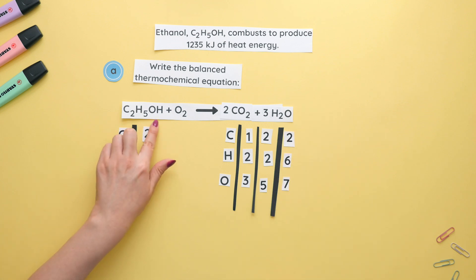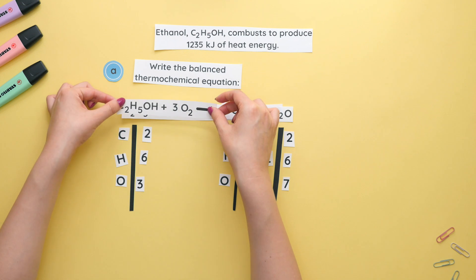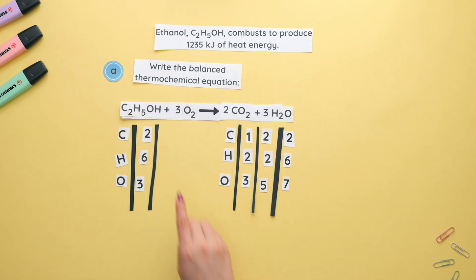We now have six hydrogens and four plus three oxygen so seven. Now for the oxygens. Since there is one oxygen here and two here, we will make this oxygen a six by placing a three in front of the O2. And now we have six plus one so seven oxygens. This is now balanced.